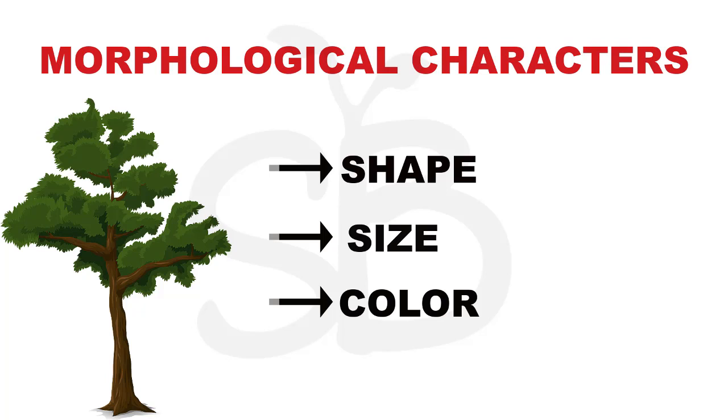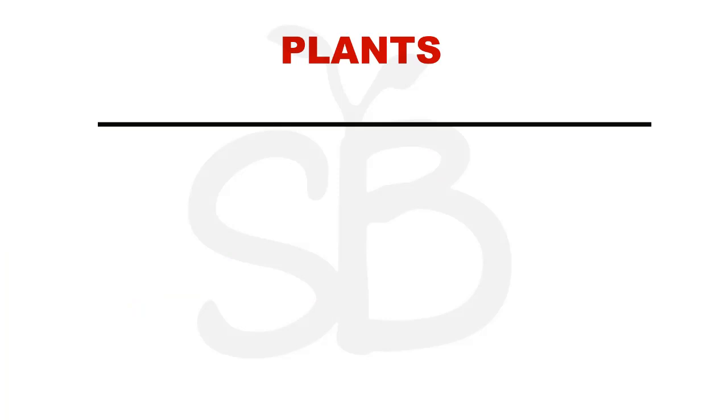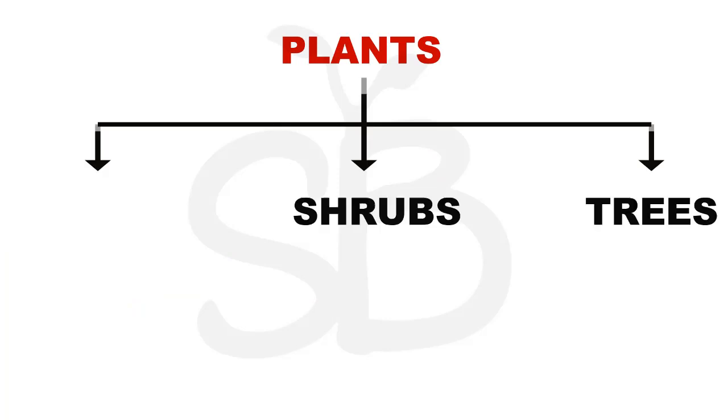Morphological characters include examples like shape, size, color, etc. These three groups are trees, shrubs, and herbs.